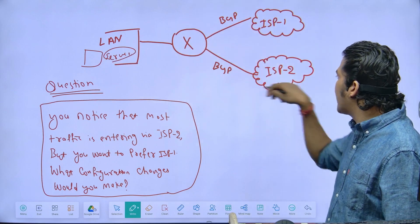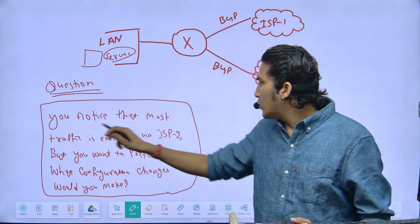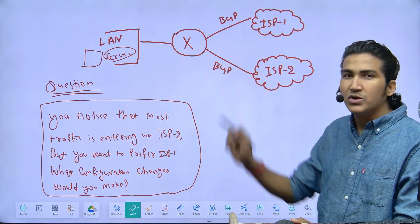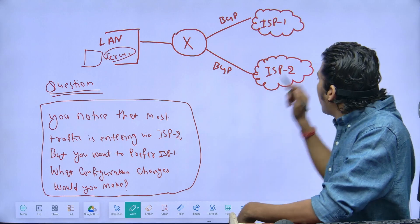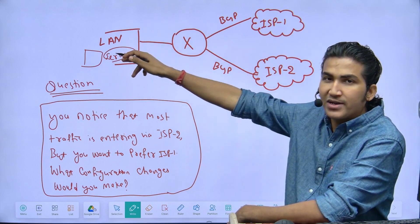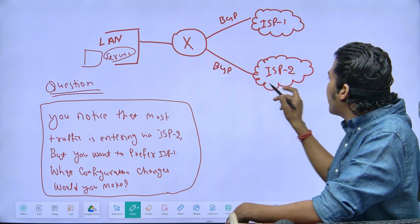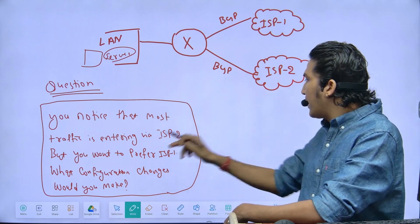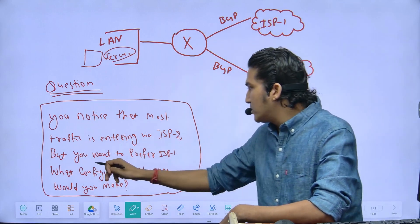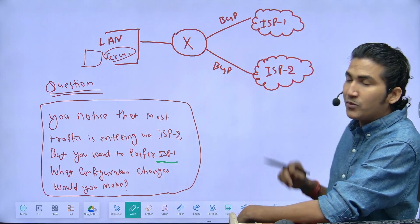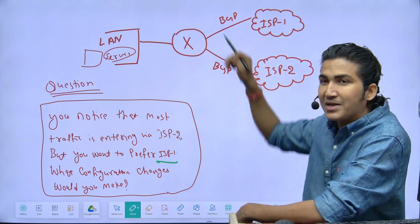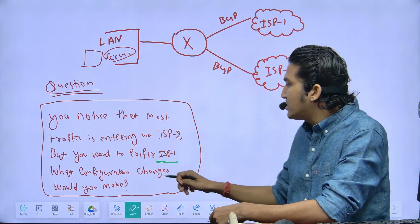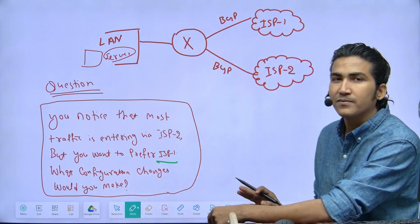This router is advertising the internal route through BGP to both ISP 1 and ISP 2. You notice that most traffic is entering via ISP 2 — whenever outside users access your server, traffic is coming in from ISP 2. But you want to prefer ISP 1 and receive traffic through ISP 1. What configuration changes would you make?